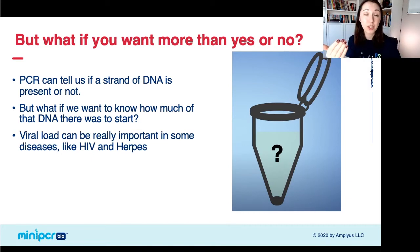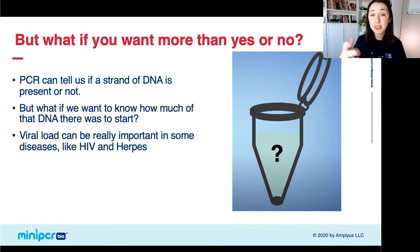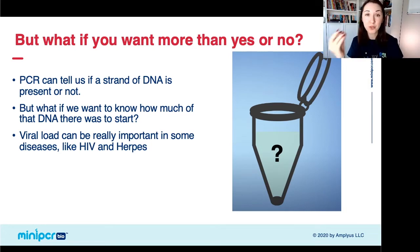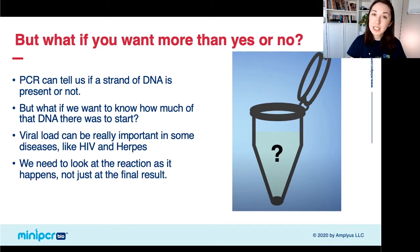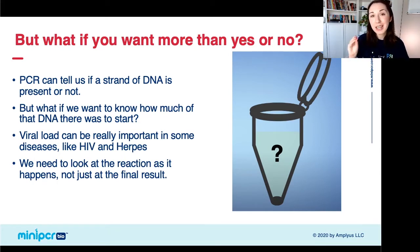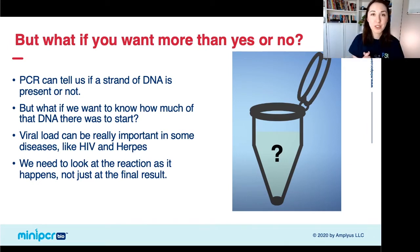This can be really important for some viruses — things like HIV and herpes where viral load matters. It's not just important whether you do or do not have the virus; it's very important to know how much of it you have. So we need to look at the reaction not just at the end, but during the reaction as it happens, to figure out which samples started with more or less DNA.